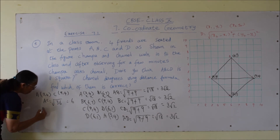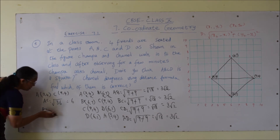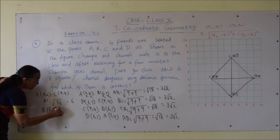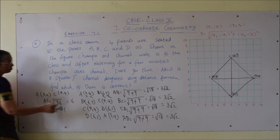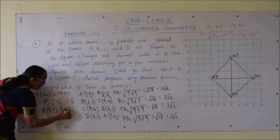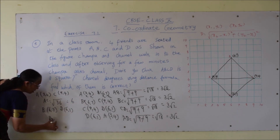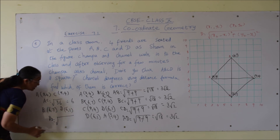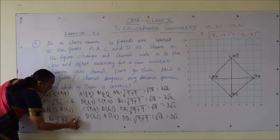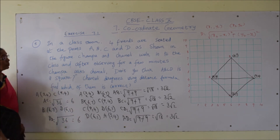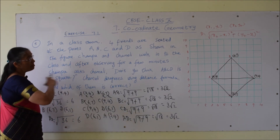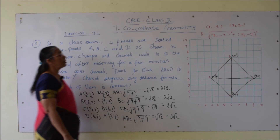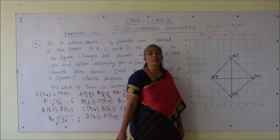Now for BD: B vertex is (6, 7) and D vertex is (6, 1). Distance BD = root over (6 − 6)² + (1 − 7)² = root over 0 + (−6)² = root over 36 = 6. So we proved the diagonals AC and BD are also equal. Therefore the given vertices form a square.